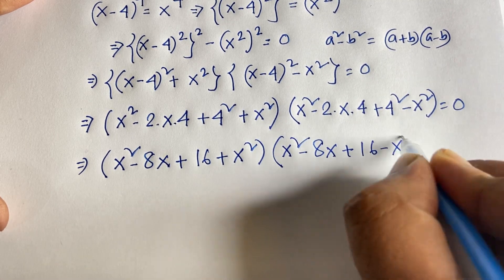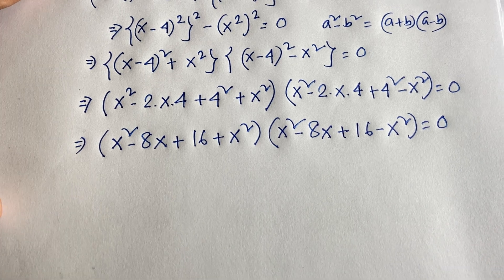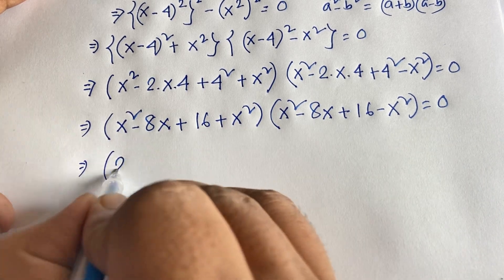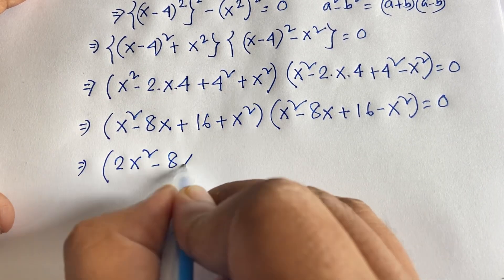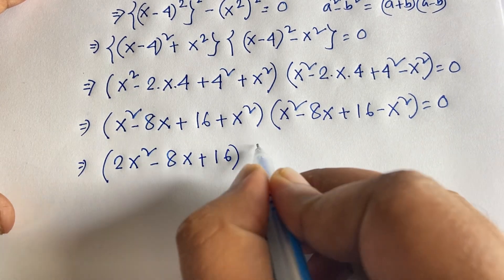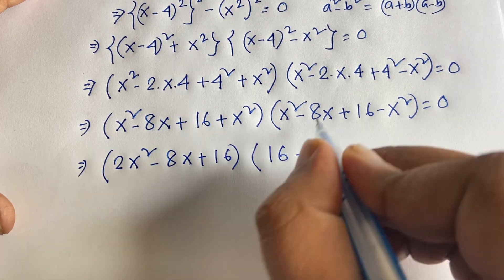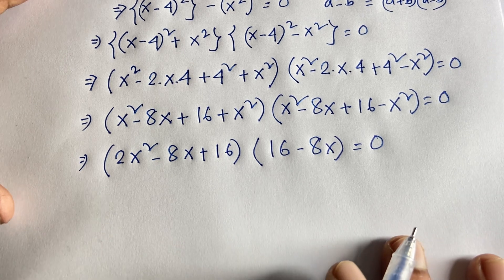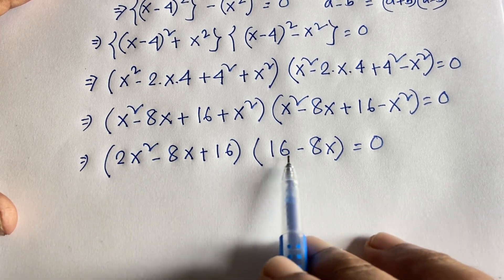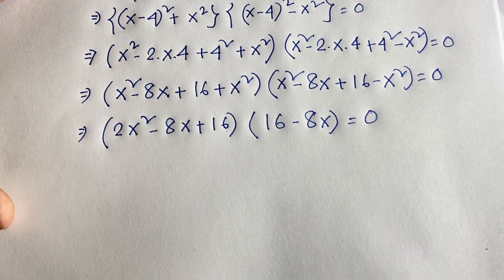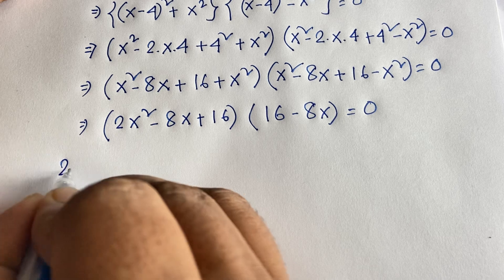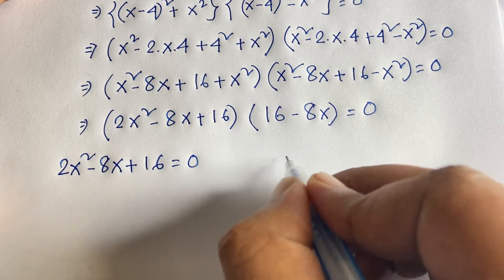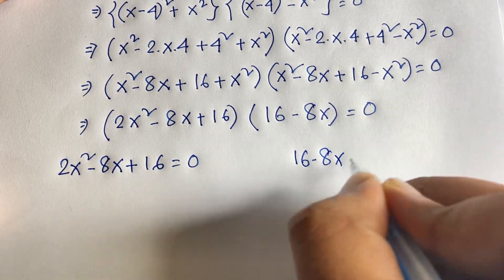Simplifying: the first factor gives 2x squared minus 8x plus 16, and the second factor gives 16 minus 8x. So we have two cases: Case 1: 2x squared minus 8x plus 16 equals 0, and Case 2: 16 minus 8x equals 0.